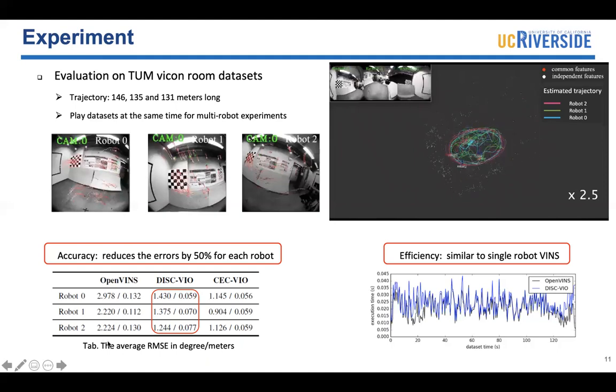From this table, we can find DISC-VIO can reduce the error by almost 50% for all three robots. Additionally, we timed the execution time. That includes propagation, tracking, and update times for each robot. DISC-VIO has a similar efficiency as a single robot OpenVINS.